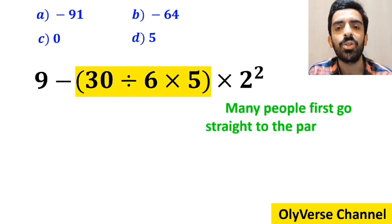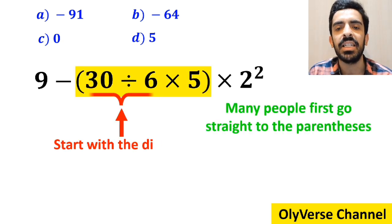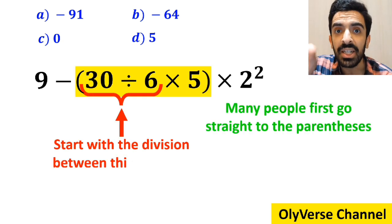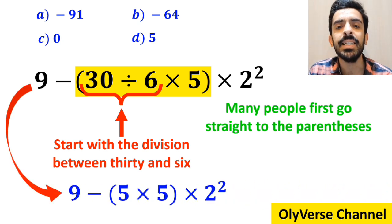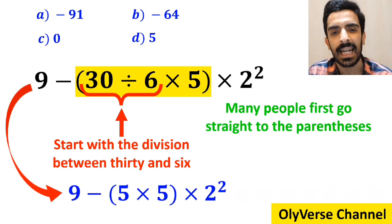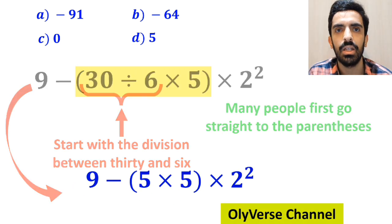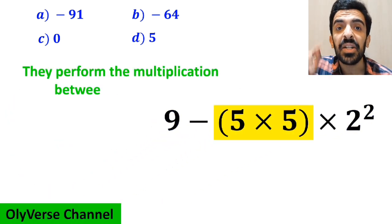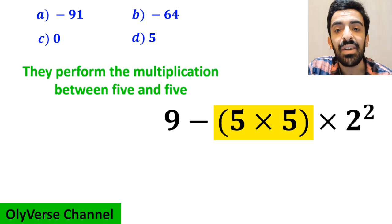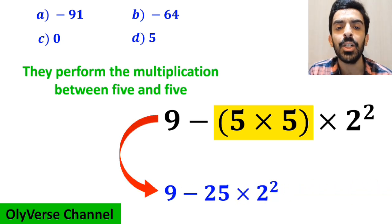To solve this question, many people first go straight to the parenthesis and start with the division between 30 and 6. So they rewrite this expression as 9 minus 5 times 5 instead of parenthesis, then multiply it by 2 squared. In the next step, they perform the multiplication between 5 and 5 and simplify this expression to 9 minus 25 multiplied by 2 squared.